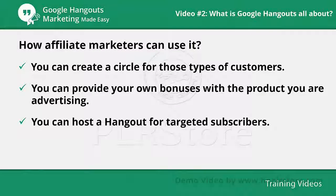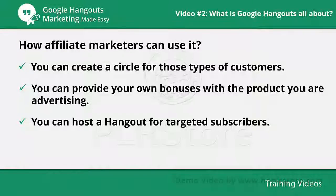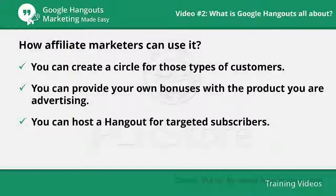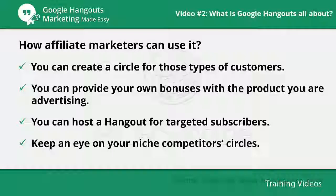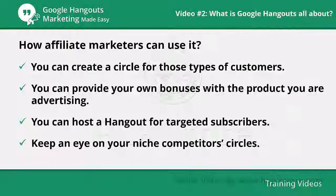You can host a hangout for targeted subscribers and motivate them to sign up for your mailing list to book their spot in the hangout. With this, you'll be able to create your own leads, promote affiliate products to those leads, and get more users into your product sales funnel. Keep an eye on your niche competitor circles to offer more choice-based products that match your audience's needs.